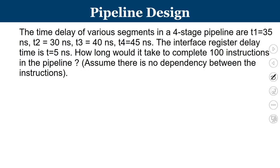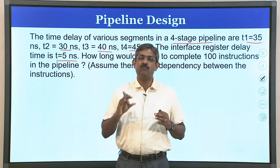Here is the first question we would like to solve today. The time delay of various segments in a 4-stage pipeline are T1 = 35 nanoseconds, T2 = 30 nanoseconds, T3 = 40 nanoseconds, and T4 = 45 nanoseconds. The interface register delay time is T = 5 nanoseconds. We know that in a pipeline, between two pipeline stages, we add a pipeline interface register, which here has a delay of 5 nanoseconds.